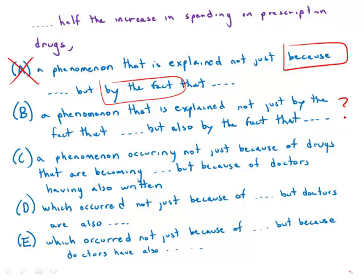Answer C is just another disaster: 'a phenomenon occurring not just because of drugs that are becoming, but because of doctors having also written them.' That is a miserable construction. Although technically it does have 'not just because... but also because,' so it technically has correct parallel structure.